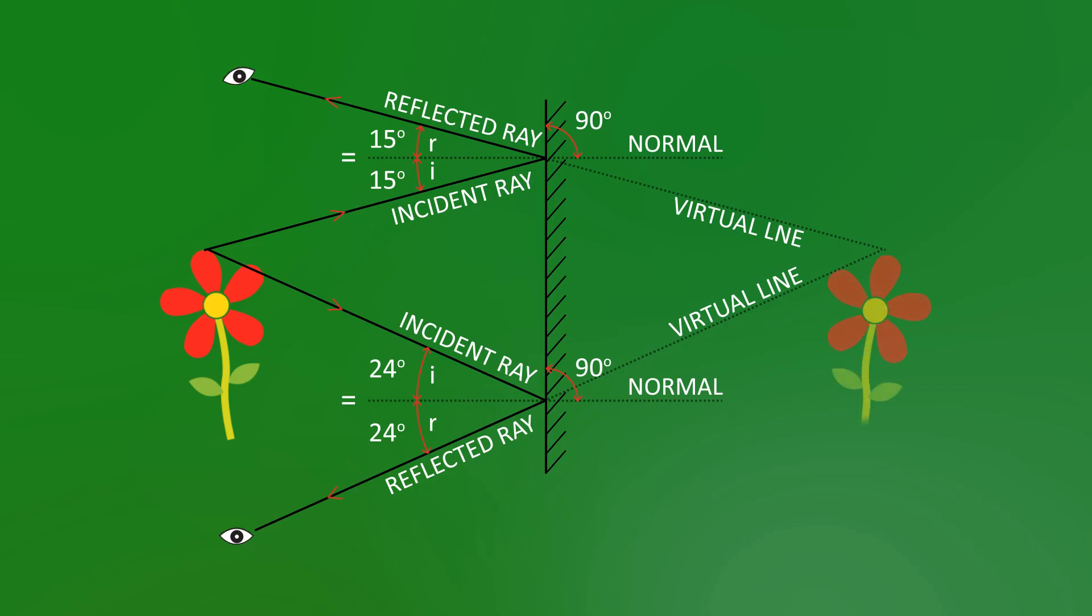And we can easily then draw the rest of the flower around this. Again, this is going to be a virtual image of a flower. What we really mean by a virtual image is we couldn't project it onto a screen.